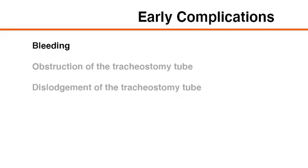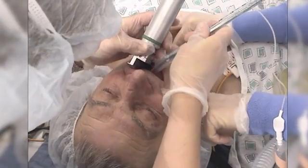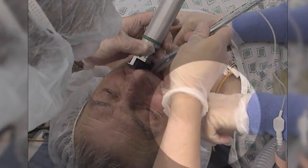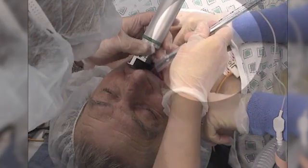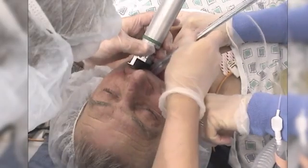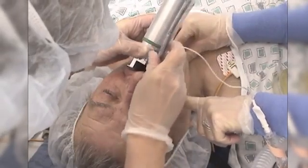Early complications after tracheostomy placement include bleeding, obstruction, and dislodgement of the tracheostomy tube. Bleeding is the most common complication, but is usually self-limited or can be controlled with measures such as application of pressure. If obstruction of the tracheostomy cannot be cleared with standard suctioning techniques, or if the tube becomes dislodged, the airway should be secured through oral tracheal intubation instead of attempting to insert a new tracheostomy tube through a tract that has not yet fully matured.